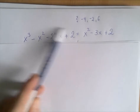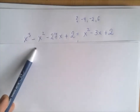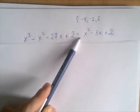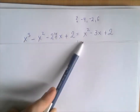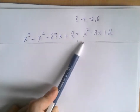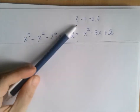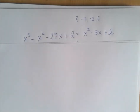Evaluate the left-hand side of this equation with x equals negative 4. That's one. Evaluate the right-hand side of this equation with negative 4. Compare. If the two sides are equal, negative 4 is a solution. If they aren't, then negative 4 isn't a solution. Then rinse and repeat.